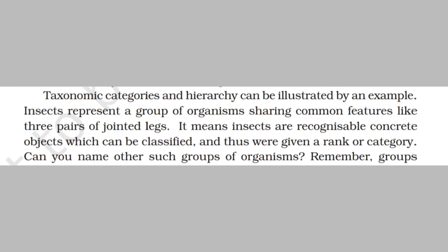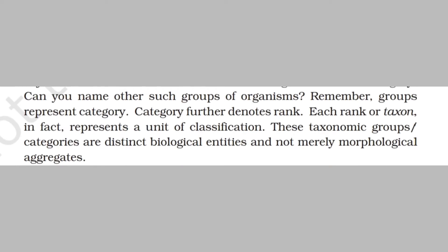Insects represent a group of organisms sharing common features like three pairs of jointed legs. It means insects are recognizable, concrete objects which can be classified and thus were given a rank or category. Can you name other such groups of organisms? For example, birds, mammals, reptiles, etc.